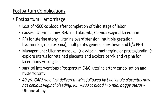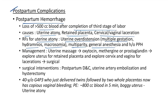Postpartum hemorrhage is loss of >500 mL blood after completion of the third stage of labor. Causes: uterine atony, retained placenta, cervical or vaginal laceration. Risk factors for uterine atony: uterine overdistension (from multiple gestation, polyhydramnios, macrosomia), multiparity, general anesthesia, and history of postpartum hemorrhage. Management: uterine massage, drugs (oxytocin, methergine, or prostaglandin), explore uterus for retained placenta, explore cervix and vagina for lacerations.